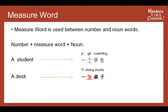So firstly, let's see the first measure word with an example: 'a student.' In English you only need to say the number and the noun, but in Chinese you absolutely must add a measure word. So 'a student' in Chinese is: 一个学生。 一个学生。 个 here is the measure word. 个 is a very useful and common measure word — you will see it in a lot of situations.